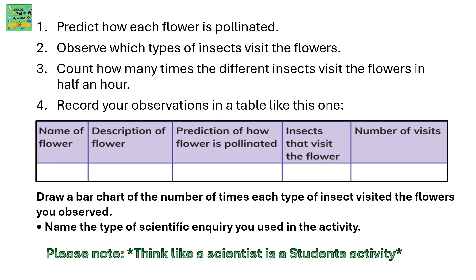Now you can predict how each flower is pollinated. Observe which types of insects visit the flowers. Count how many times the different insects visit the flowers in half an hour. Record your observations in a table with the following columns: name of flower, description of the flower, prediction of how the flower is pollinated, insects that visit the flower, and number of visits. Draw a bar chart of the number of times each type of insect visited the flowers you observed.